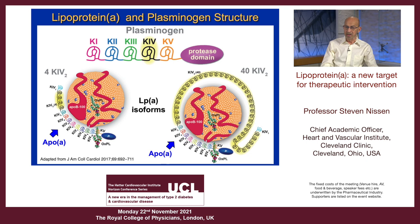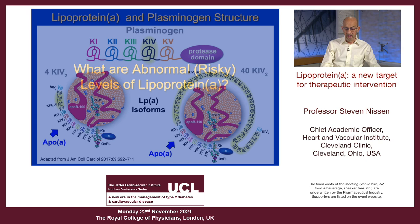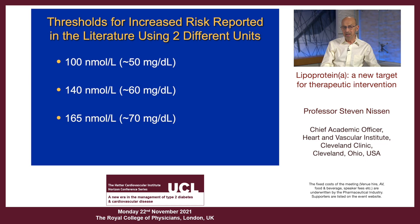What are abnormal or risky levels? The cut points typically used are anywhere from 50 to 70 milligrams per deciliter, or if you're somewhere where measurement is made in nanomoles, anywhere from 100 to 165 nanomoles per liter. The fact that there are two different unit systems has created a lot of difficulty and confusion in educating physicians about how to interpret these blood levels.